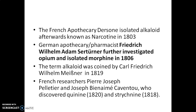The history of use of alkaloid as a drug or for other purposes is as old as human civilization. The French apothecary Dersen first isolated an alkaloid afterwards known as Narcotin in 1803, and German pharmacist Frederick Wilhelm Schartner further investigated opium and isolated morphine in 1806. The term alkaloid was coined by Carl Michener in 1819.